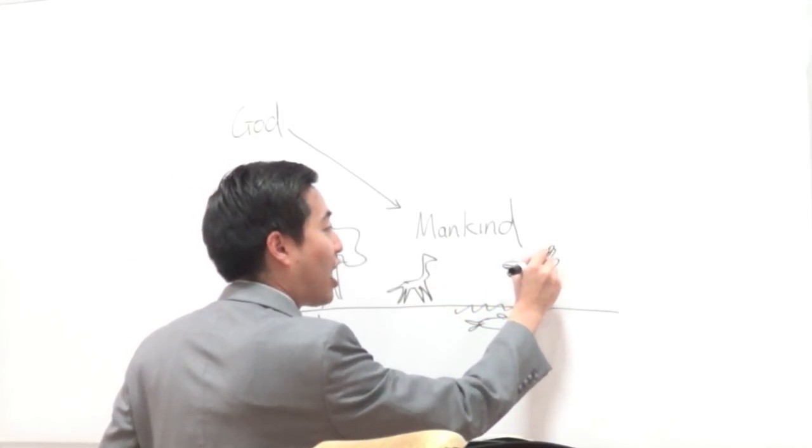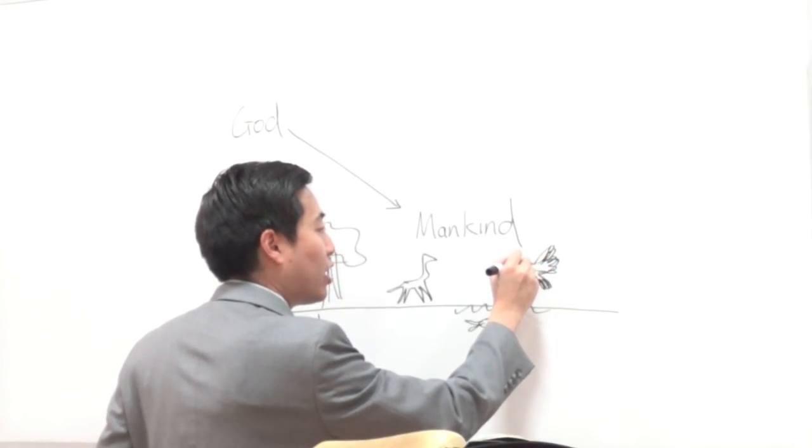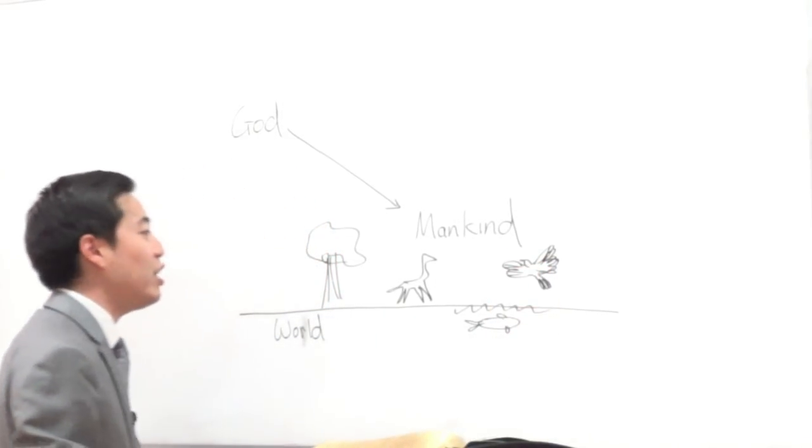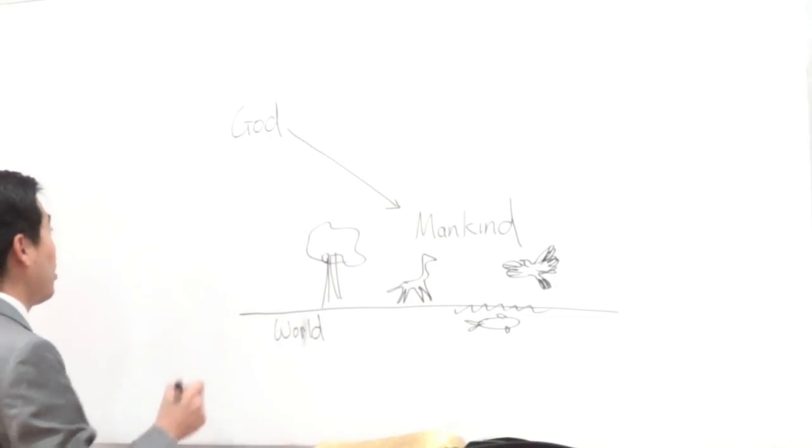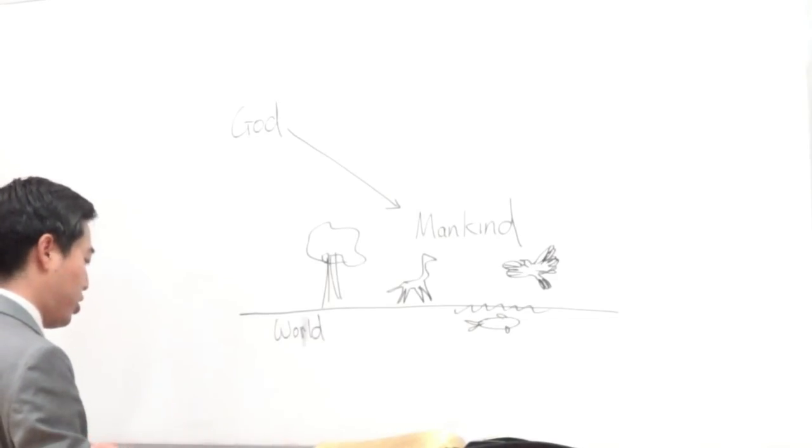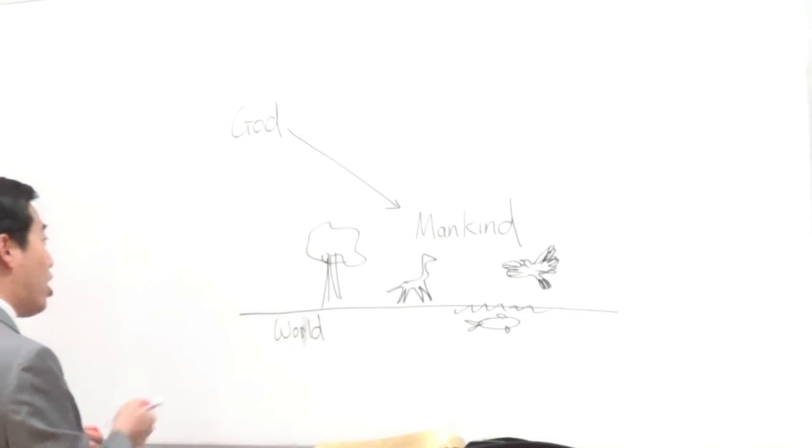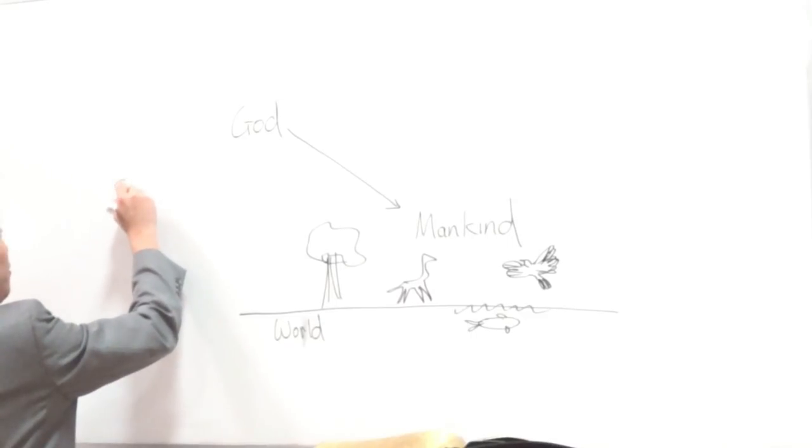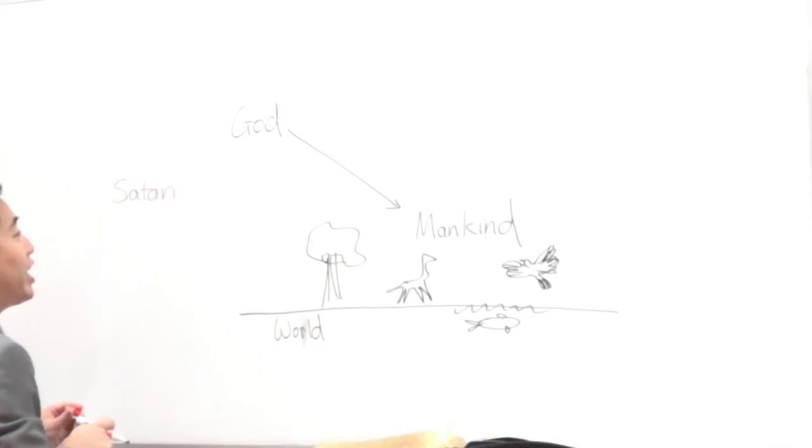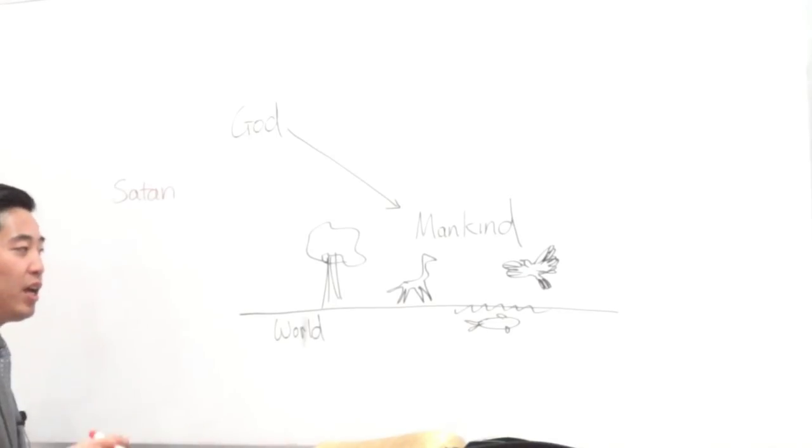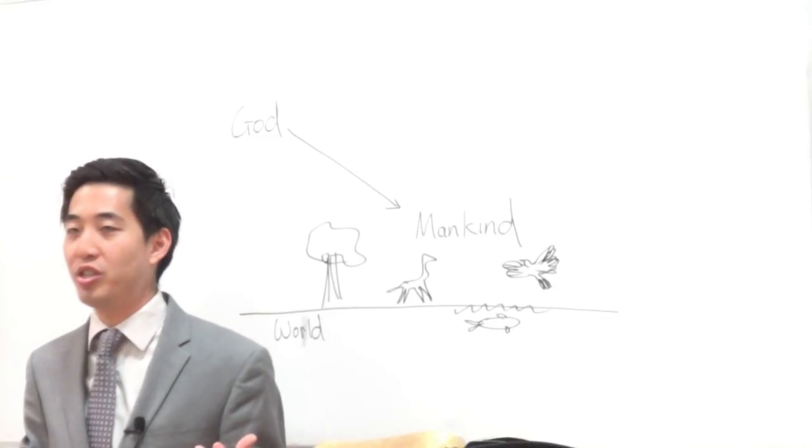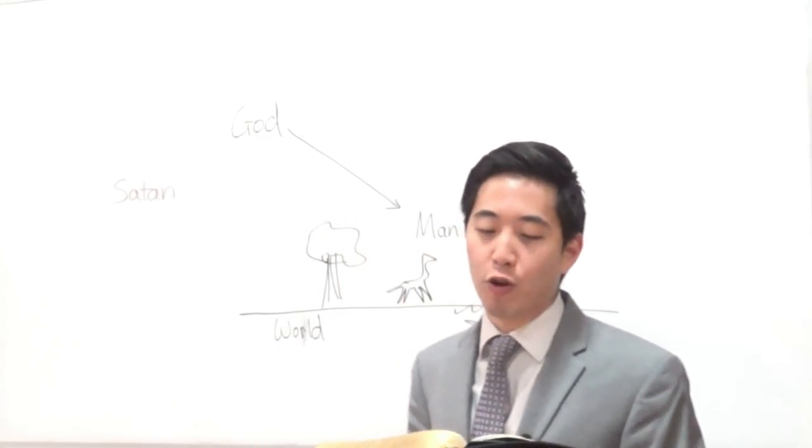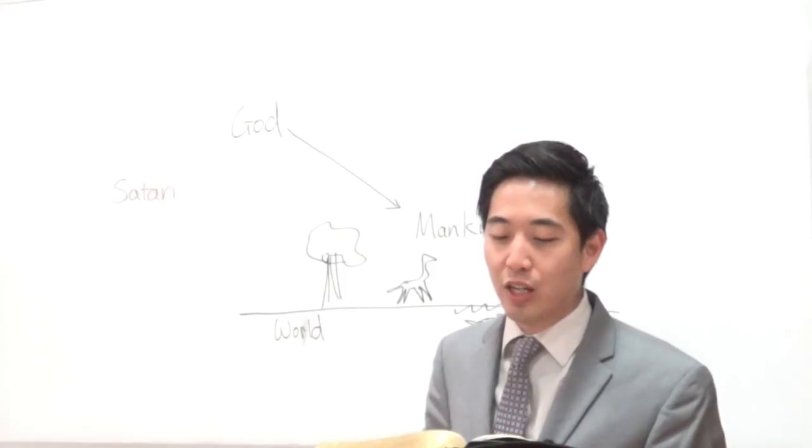So when God gave mankind dominion over everything in life, Satan, he was watching, obviously. And Satan, when he saw how God gave rulership to mankind upon the earth, what do you think Satan wants to do? Satan, what he wants to do is take it for himself. And what he wants, let's see how Satan twists everything around with God, which is extremely interesting. First of all, notice right here, verse 27, so God created man in his own image.